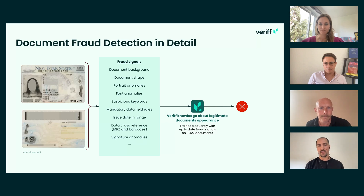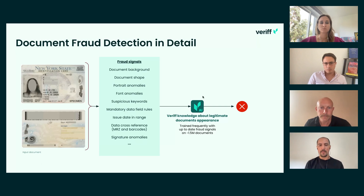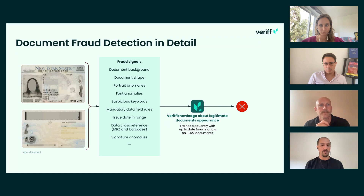Let me tell you a bit more about how we work, how this AI model at Verif works. We have documents that come into our system — like the front and the back of a New York State Identification Card. From this, we detect signals that I'll explain later in more detail. We then have a general artificial intelligence model that aggregates all this information, using all the Verif knowledge about how a legitimate document looks. We train this model with around 1.5 million documents — lots of data.